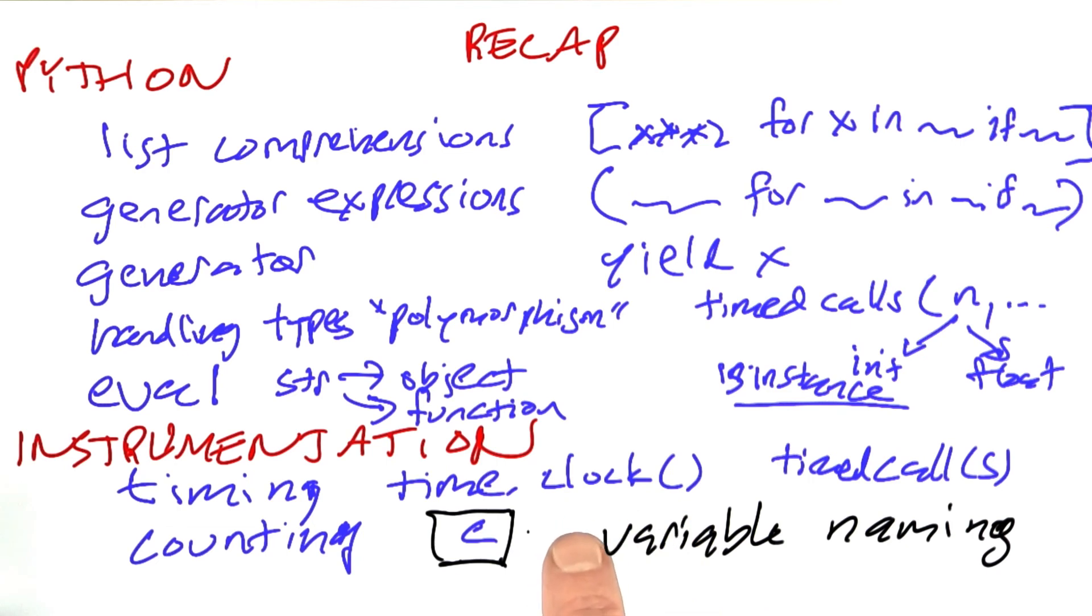Things that are going to persist for longer have longer names. For example, it's fine to say for i in range something where we know that i is an index integer, and it only persists over this short loop, so it's okay to have a short name. If something lasts longer, we probably want it to have a longer, more descriptive name.